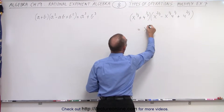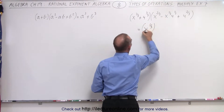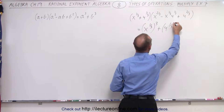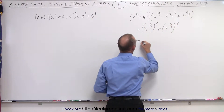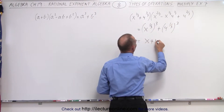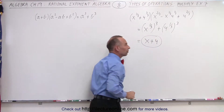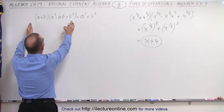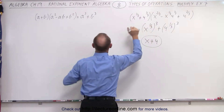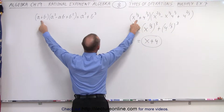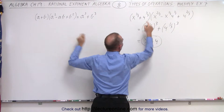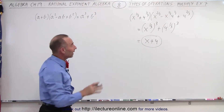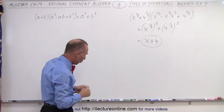In other words, this should be equal to x to the one-third, to the third power, plus 4 to the one-third, to the third power — which simplifies to x plus 4 as the final answer for that multiplication. That's simply using the connection that this was exactly the same as the standard sum of cubes form, except instead of first power we have one-third, and instead of second power we have two-thirds. Now we're going to multiply it out and show that it is indeed equal to x plus 4.